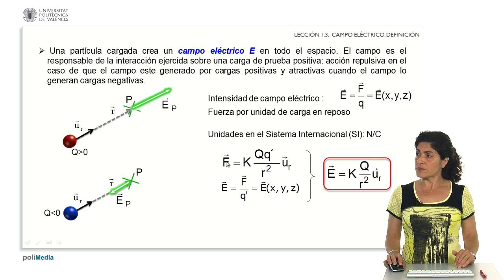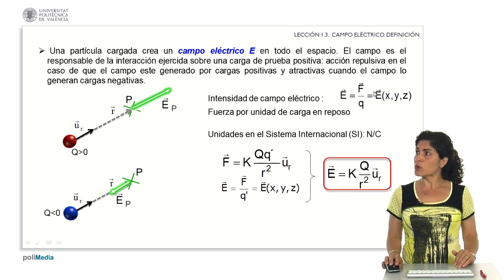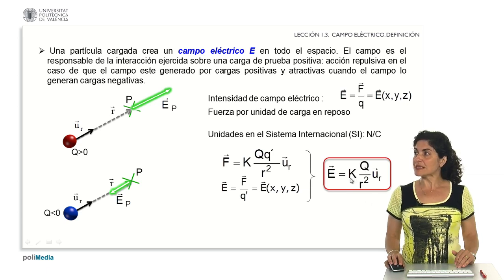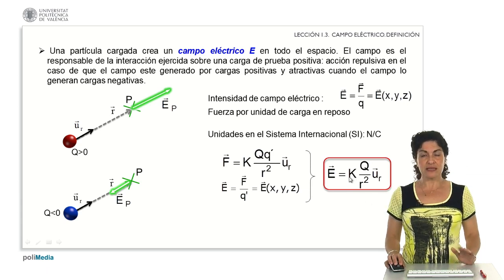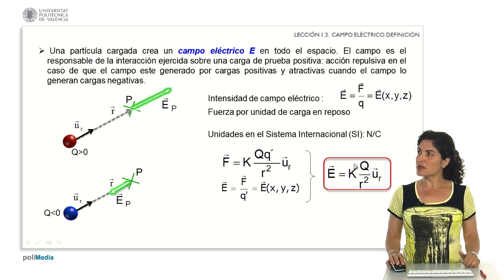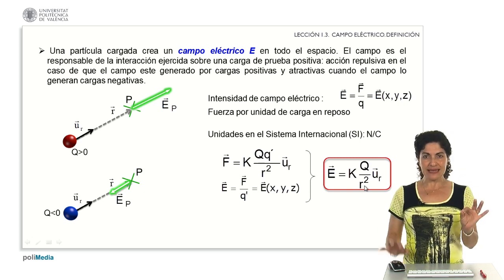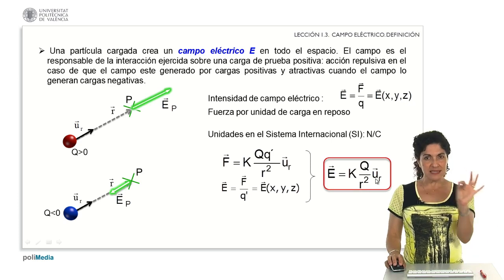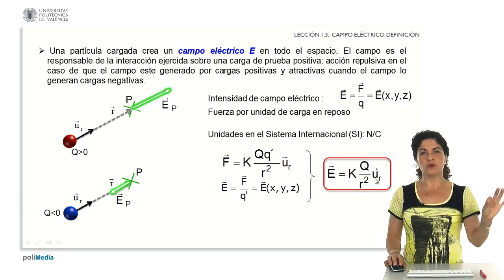Taking into account how the interaction is expressed — the vector of the electric force interaction divided by the charge — the expression to calculate the electric field due only to a single charge depends on the constant K, which depends on the dielectric constant, on the charge placed in space, on the distance squared between the charge and the point of study, and on the unit vector marking the position vector from the study point to the charge.